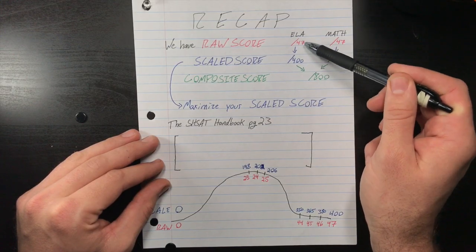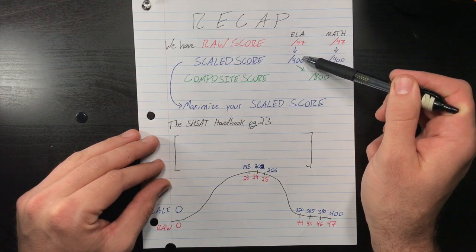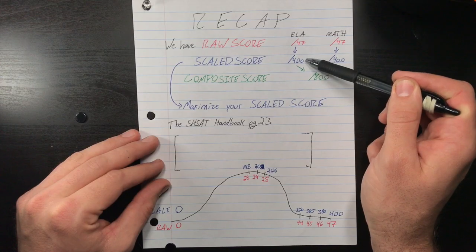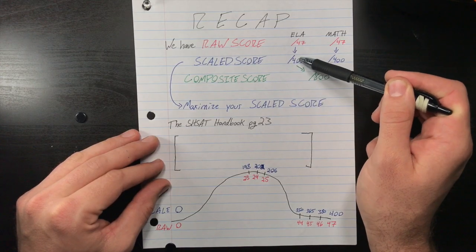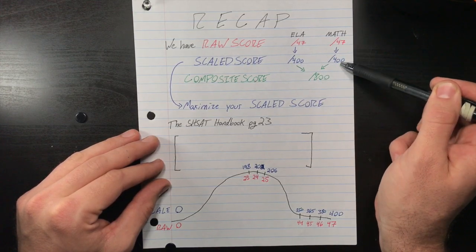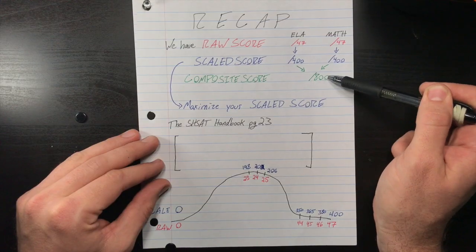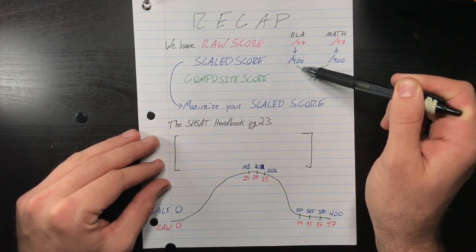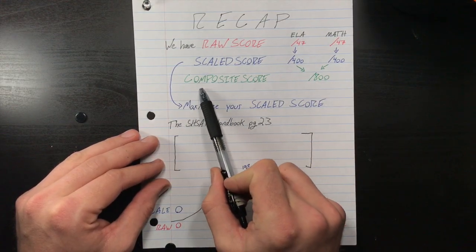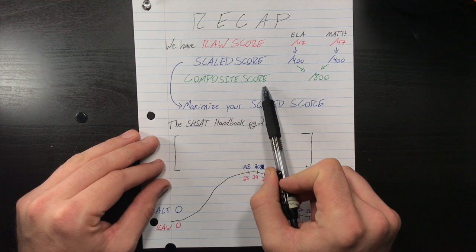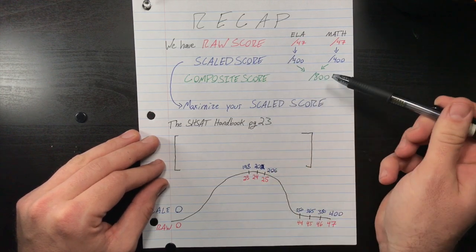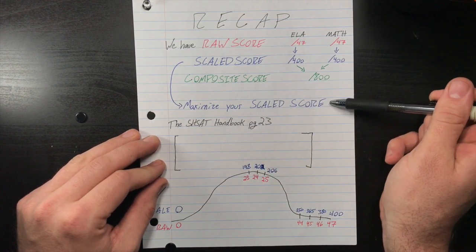We're going to talk about what they do in here because it's not proportional, they do something interesting and that's where the strategy comes in. You get an ELA score out of 400, a math score out of 400, you add those bad boys up, boom, that's your score that you send to the school out of 800, we call that the composite score.